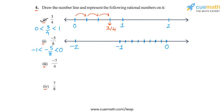Starting from 0, if we now make five jumps of 1 by 8 towards the left — 1, 2, 3, 4, 5 — we reach this point here. This point represents the rational number minus 5 by 8. So this completes part 2; this is how you can plot minus 5 by 8.